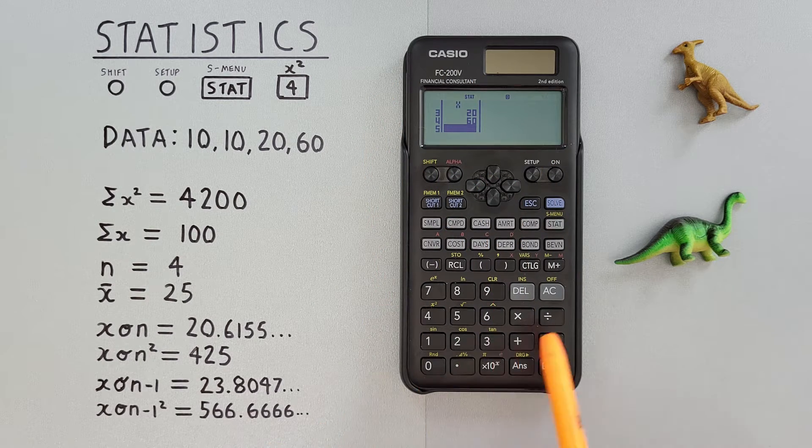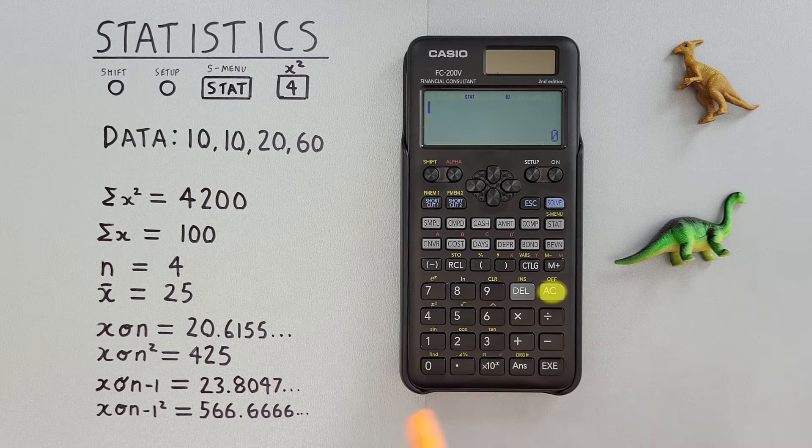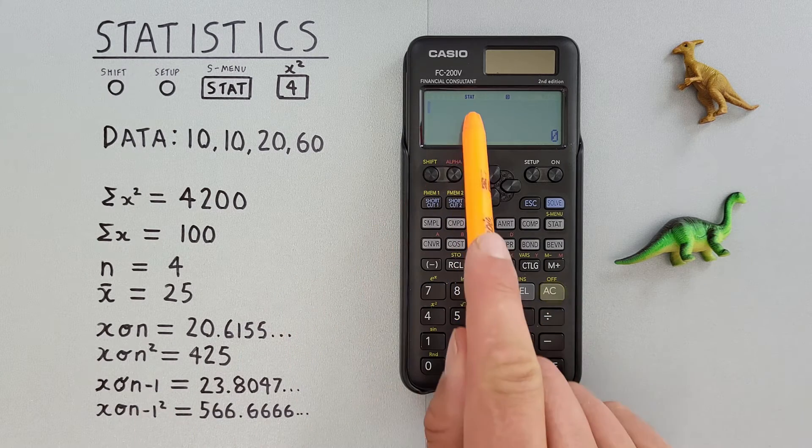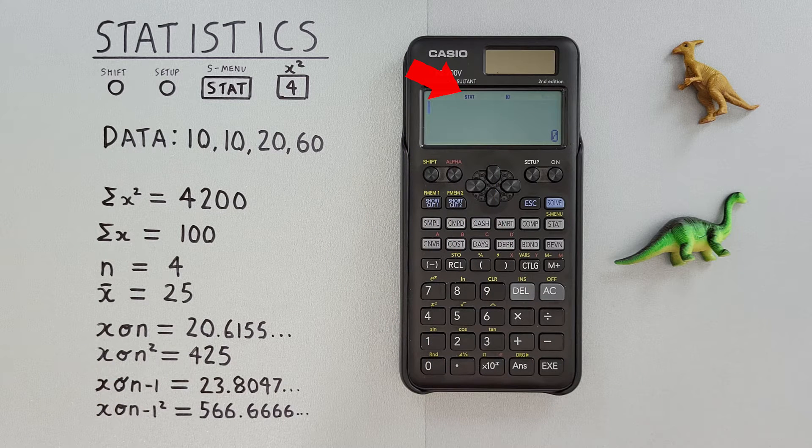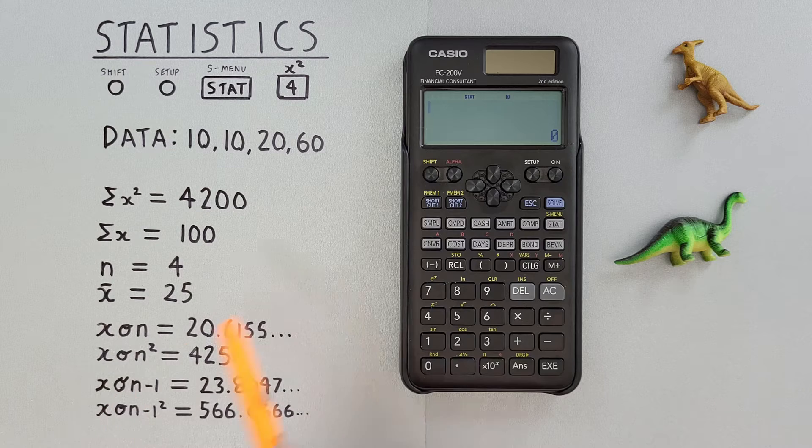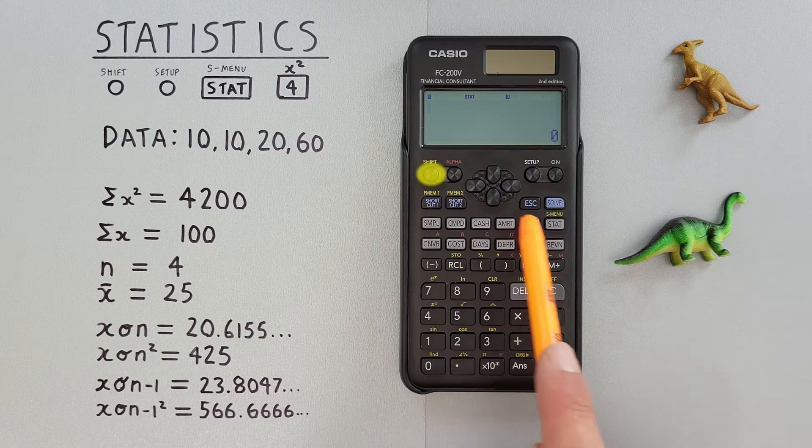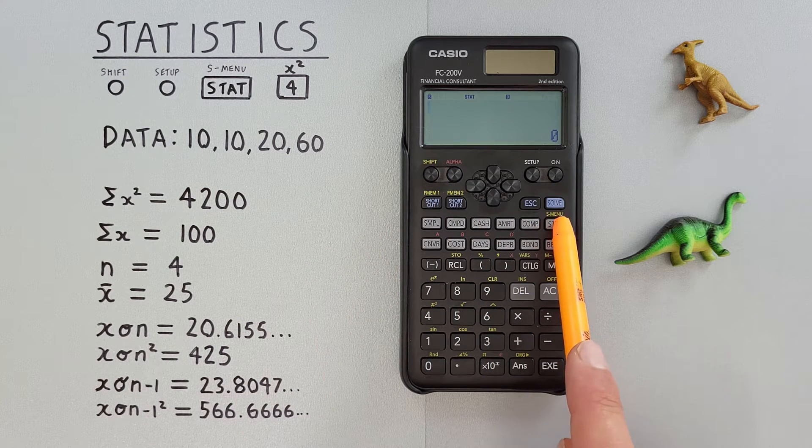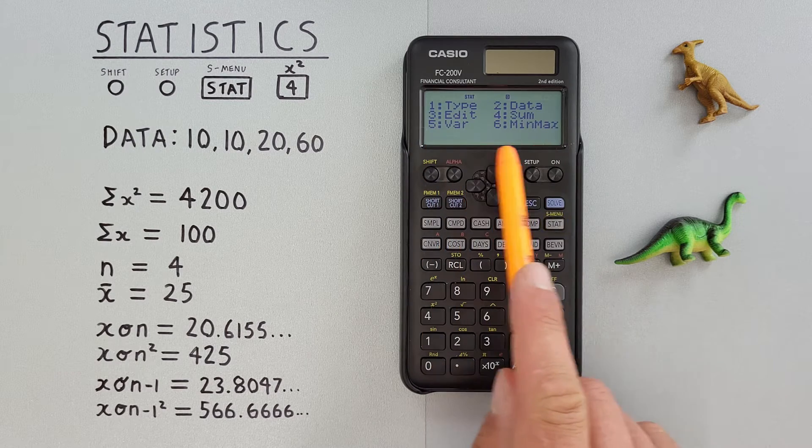Now we can clear out of this with the AC key. You'll now see the word STAT at the top of the screen, letting us know we're in STAT mode. Now we can go ahead and press shift stat with the S menu, which brings us to this menu here.